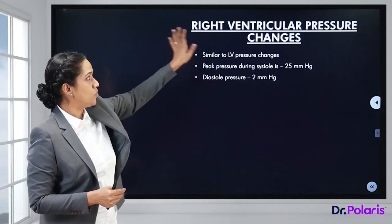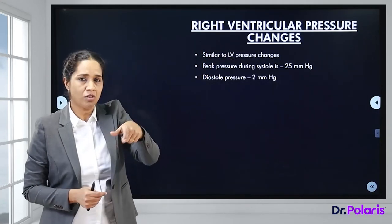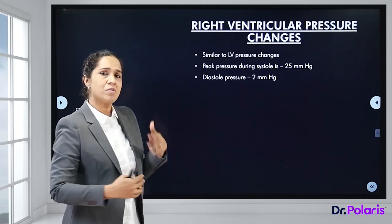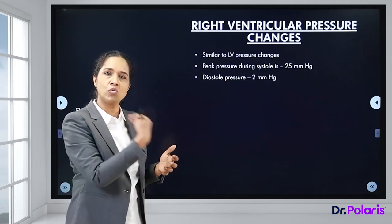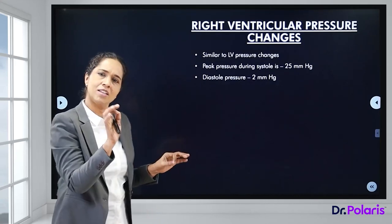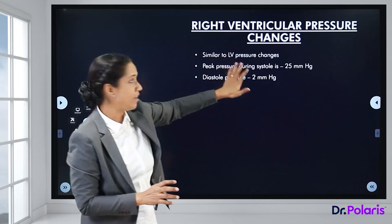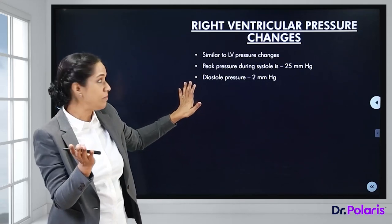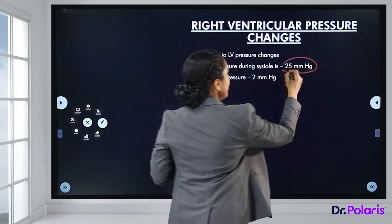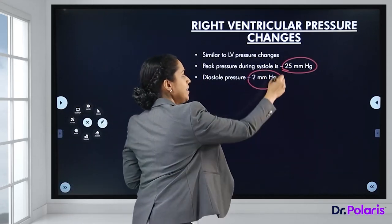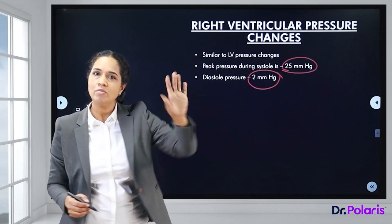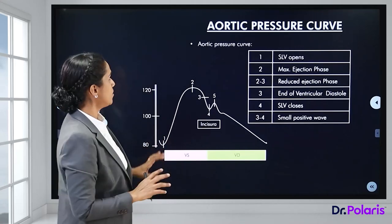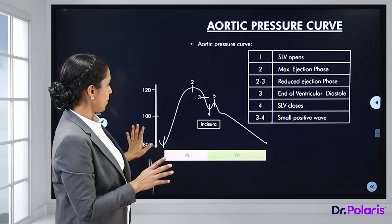Right ventricular pressure changes follow the same sequence as left ventricular changes, with the key difference being lower pressures: peak systolic pressure is only 25 mmHg (vs. 120 mmHg on the left) and diastolic pressure is only 2 mmHg (vs. ~5 mmHg on the left).